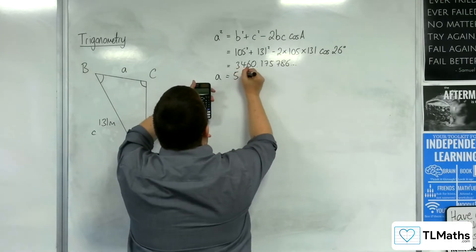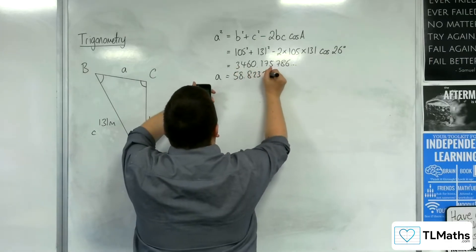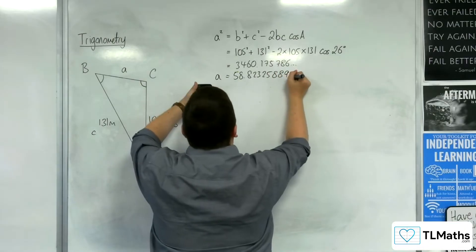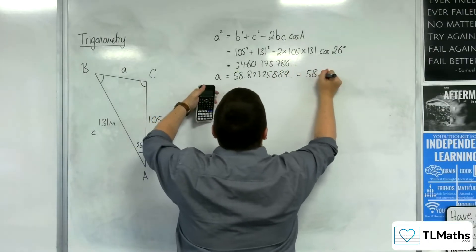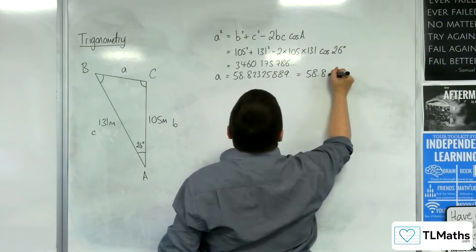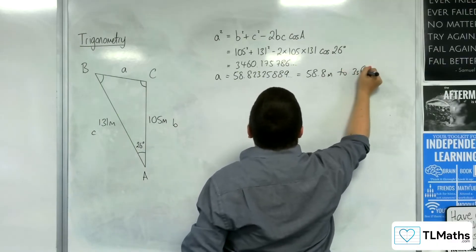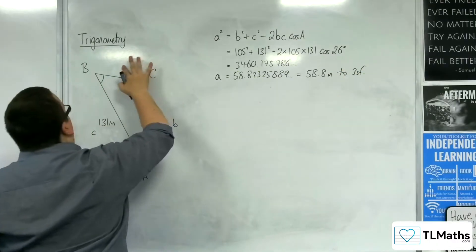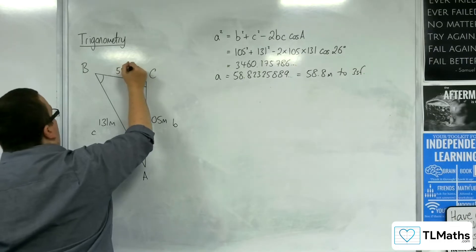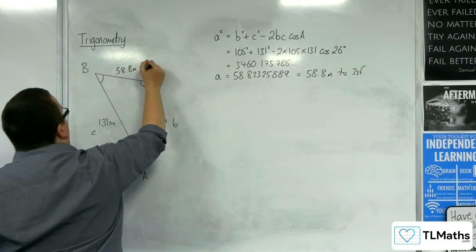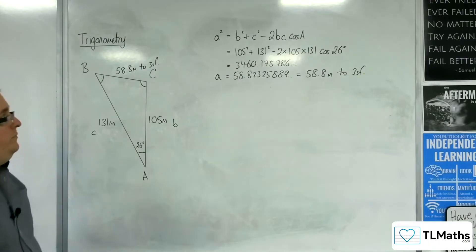And so we get 58.82325889, so 58.8 metres to 3 sig fig. I'll pop that on my diagram, 58.8 metres to 3 sig fig. So I've got that. Great.